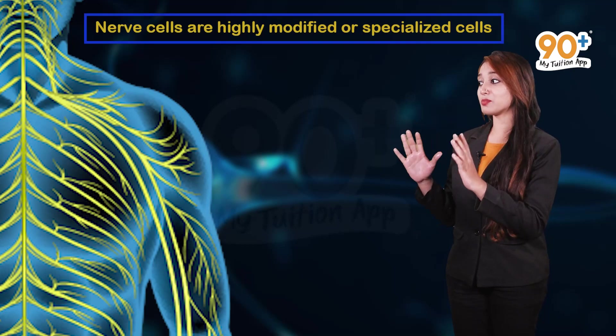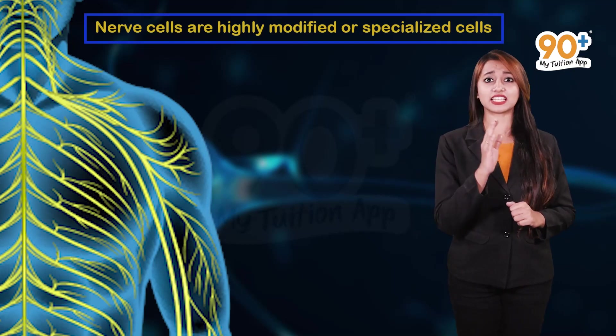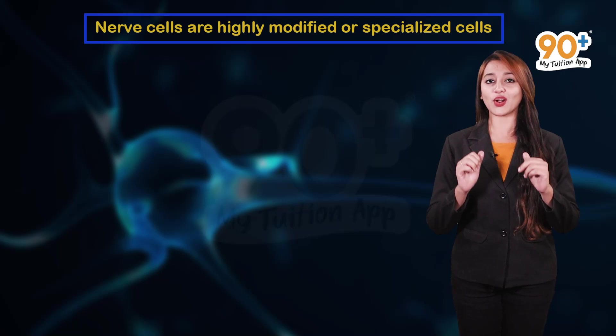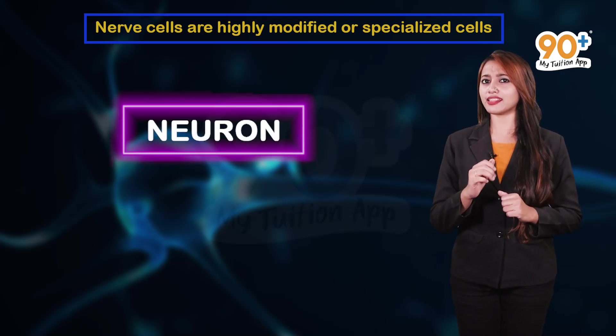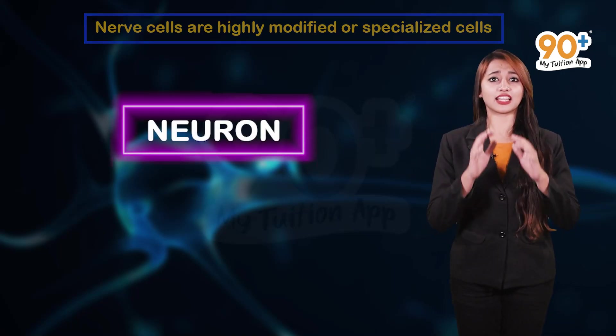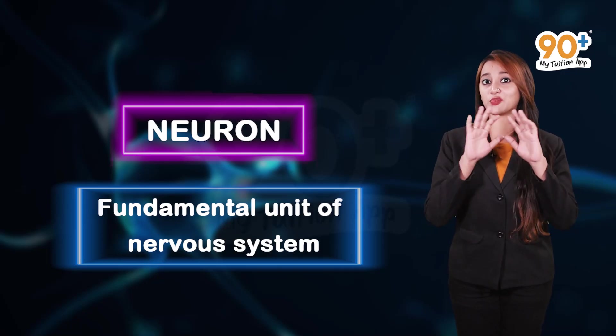If you are wondering, hey that doesn't look like a cell, then I would say they are also cells but are modified cells. They also have nucleus and everything but I agree that doesn't look similar to a normal cell because they are highly modified or specialized cells. And these cells of nerve are called the neurons and these neurons are the fundamental unit of the nervous system.